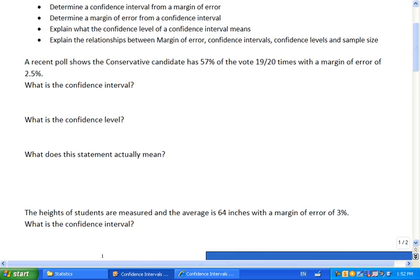So for example, you might read something like, a recent poll shows a conservative candidate has 57% of the vote, 19 out of 20 times, with a margin of error of 2.5%. Usually if you read it in the paper, that's all they report to the paper, and this section here is typically what is in the little asterisk and the small print underneath the graph or whatever they show you. So let me show you what the confidence interval looks like, and we'll talk about what this means.